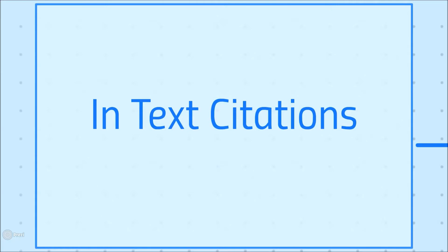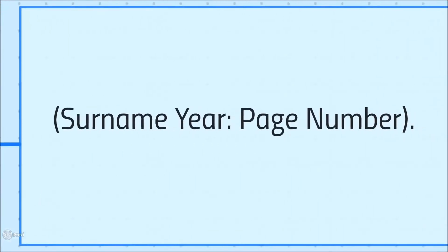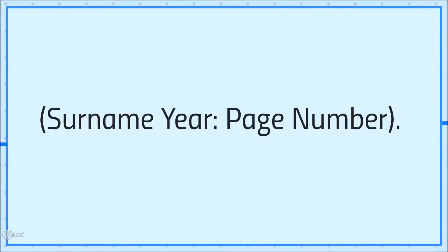An in-text citation is the reference you provide in the main body of your document. It usually goes at the end of the sentence before the full stop, although there are many ways to integrate sources into your writing. These are the parts of an average in-text citation.